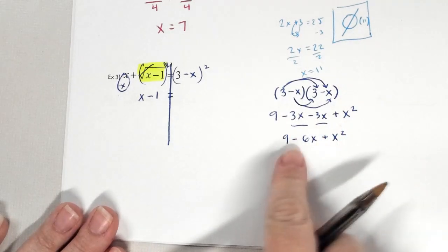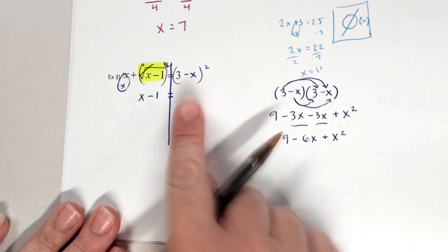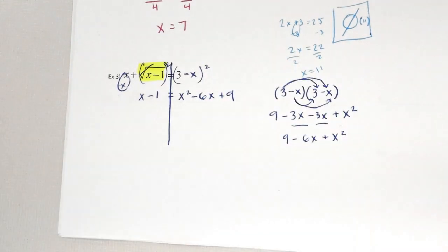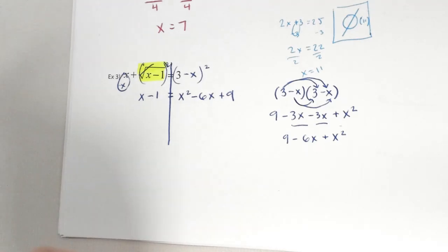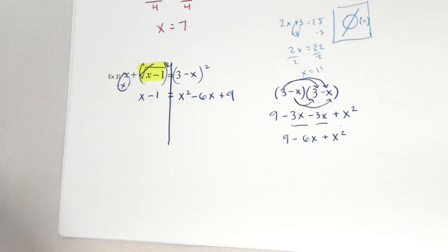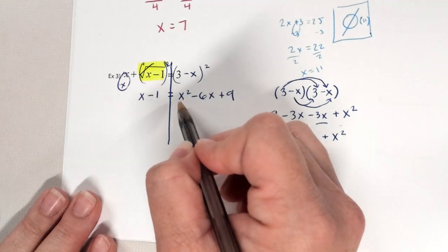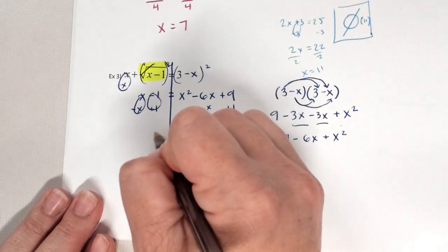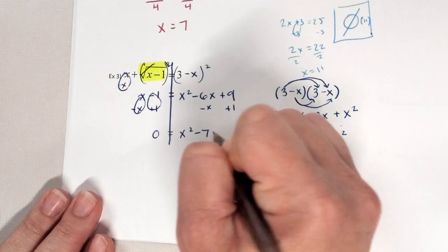It's not in order, so I'll rewrite it: x squared minus 6x plus 9. Now, this isn't like number 1 because I have a quadratic. How do we solve quadratics? We can solve by factoring or by the quadratic formula. Either way, what does my equation have to equal first? Zero. So I need to move both of these — minus x, add 1 — and I get 0 equals x squared minus 7x plus 10.